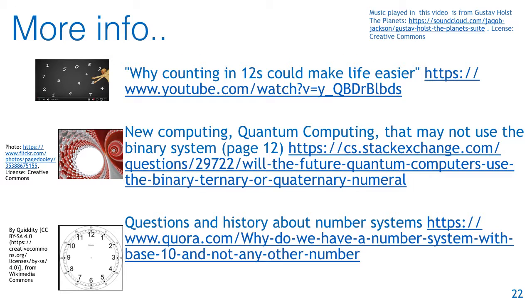But if you're interested in more information at the moment, here are three web sites that you can look at. One which talks more about why counting in twelves could make our lives easier. One which talks about a new type of computing. Quantum computing that may not use the binary system in the end. This is quite complex. You don't have to read it. You may not understand it. And you can ask questions in class. And the third is questions and history about number systems. Thank you. Look forward to talking more in class tomorrow.